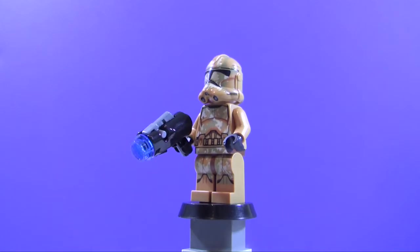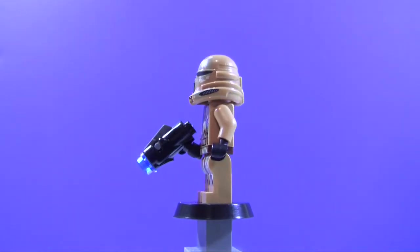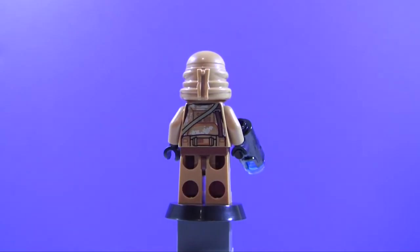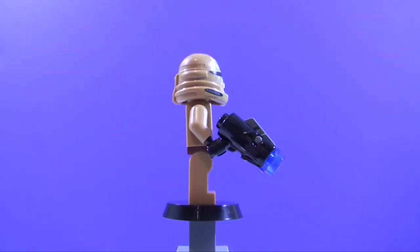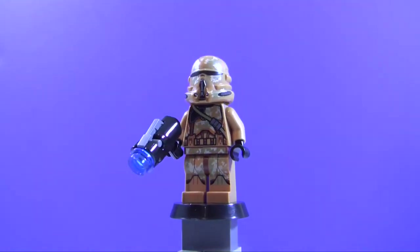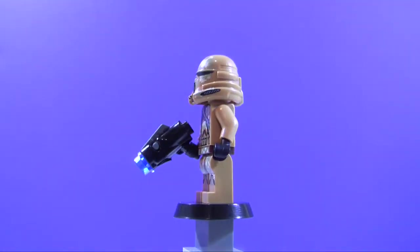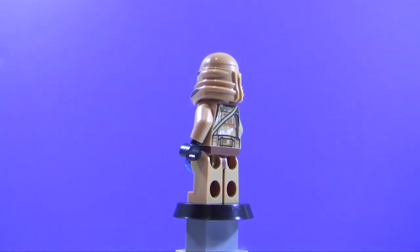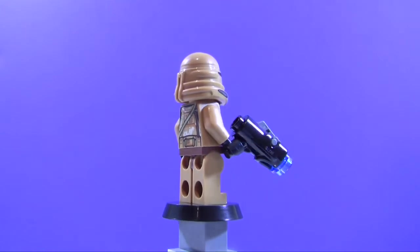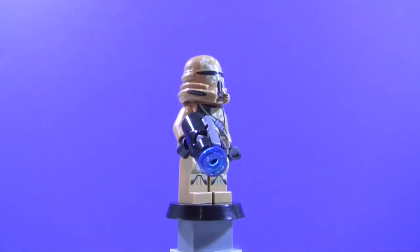Now on to the Geonosis Airborne Trooper. This is definitely my favorite figure out of the two. Once again, you get two of these in the set. You also get the stud shooting weapon as well as an extra stud too. Definitely awesome helmet printing there. Again, no arm printing, no side leg printing, back leg printing, back torso printing though with a little strap there.